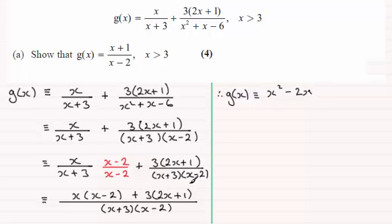Then plus 6x plus 3. So plus 6x plus 3. And all of this is divided by x plus 3 times x minus 2.